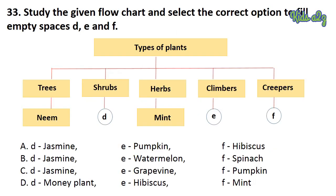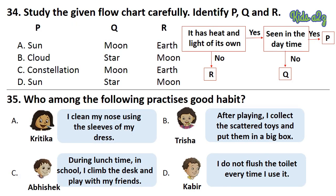Question 33: Study the given flow chart and select the correct option to fill empty spaces D, E and F. Please pause the video and look at the chart carefully. The answer is Option C — D is Jasmine, E is grapevine and F is pumpkin. Question 34: Study the given flow chart and select the correct option to fill empty spaces P, Q and R. Please pause the video and look at the flow chart carefully. The answer is Option D — P for sun, Q for star and R for moon.